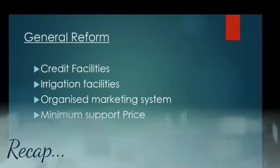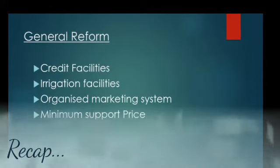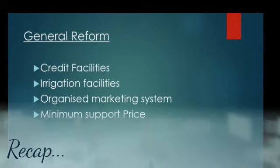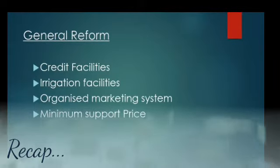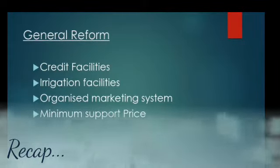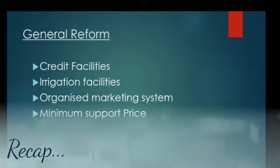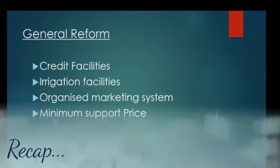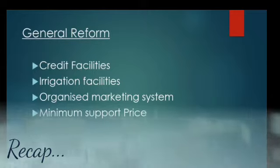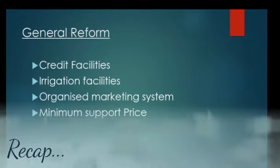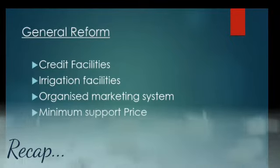Yesterday I explained you about the general reforms taken by the government to improve the agriculture sector in India. As we studied in chapter one, our country was stagnant and backward, so to improve the condition, government took various steps. Under the general reform, government firstly provided loans from various sources to the farmers so that they can complete the financial need to buy seeds and afford modern machinery.